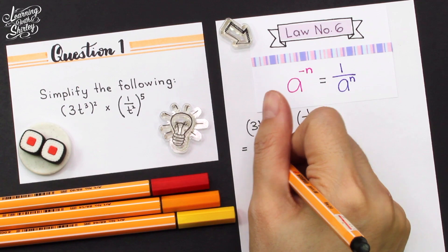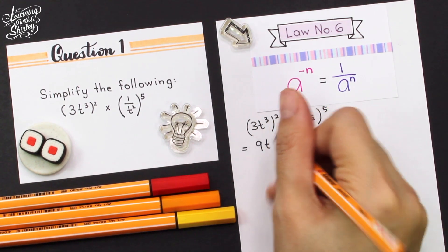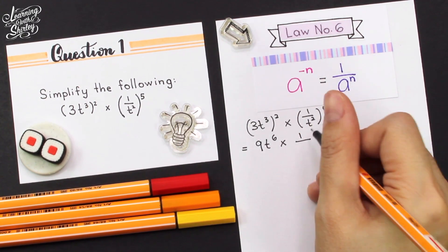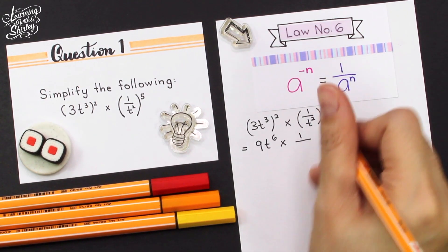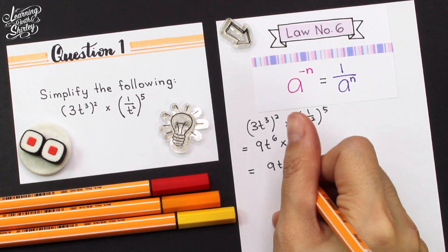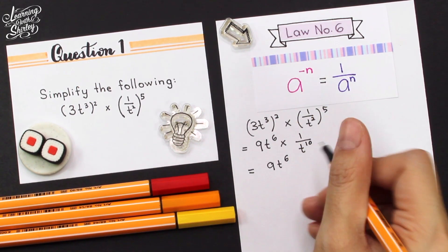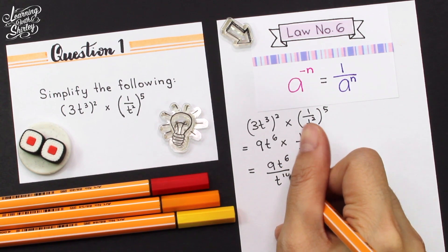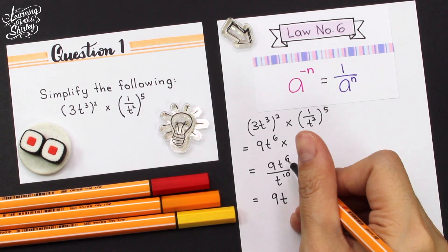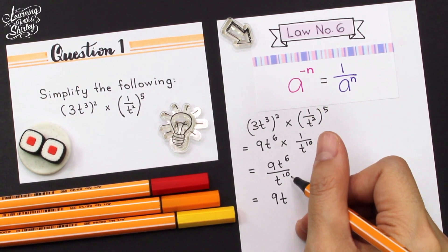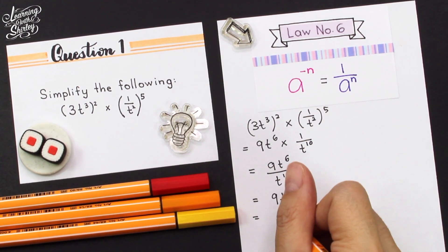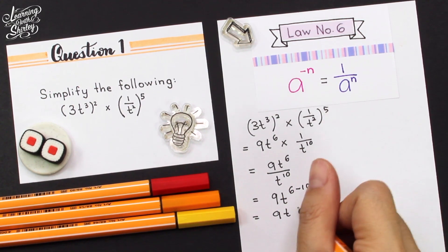So 3 squared is 9, and t: 3 times 2 is 6, times 1 to the power of 5 is 1 over t squared to the power of 10. So this equals 9t to the power of 6, times 1 over t to the power of 10. Because of divide, t to the power of 6 divided by t to the power of 10, we minus the indices. So it becomes 6 minus 10, which equals 9t to the power of negative 4.